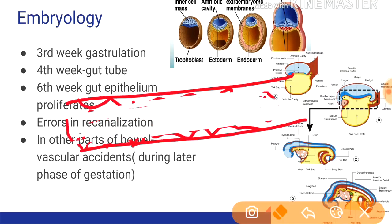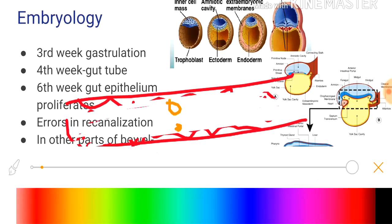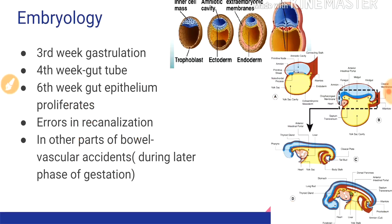Duodenal atresia is a defect in re-canalization. If some of the proliferated cells persist, it becomes a web — a duodenal web. Duodenal atresia is due to errors in re-canalization during the sixth week of gestation. Whereas, in other parts of the bowel, like jejunal atresia and ileal atresia, these are due to vascular accidents and they occur during the later phase of gestation.